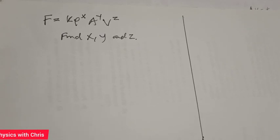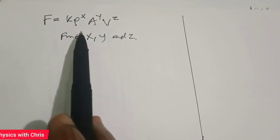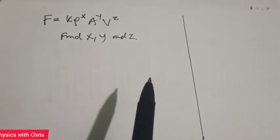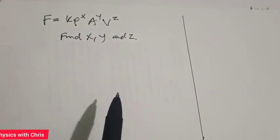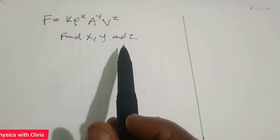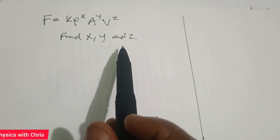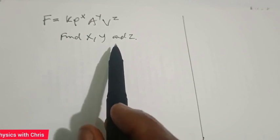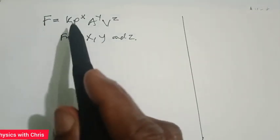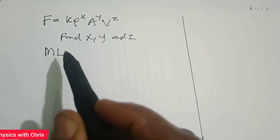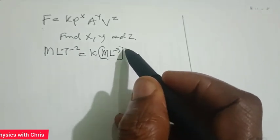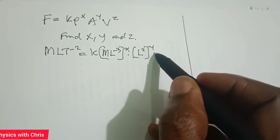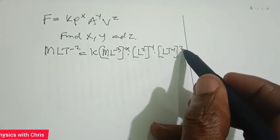Now we want to find the dependence of force F on density, area, and speed. We need to use dimensional analysis to derive the exact relationship: F = K × ρ^x × A^y × v^z. Substituting dimensions: the dimension of F is MLT⁻², density is ML⁻³ raised to power x, area is L² raised to power y, and speed is LT⁻¹ raised to power z.